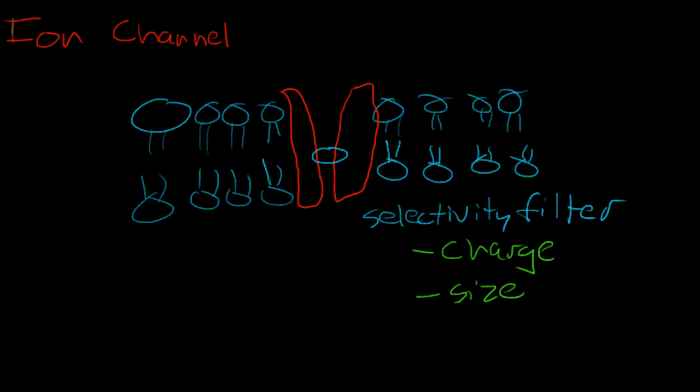For instance, there is an ion channel that is specific for potassium, and it allows potassium to slowly leak out of the cell from the intracellular space to the extracellular space. But it doesn't let any other ions pass through. So this is an ion channel that is specific for potassium. By the nature of the selectivity filter, by size and charge and other factors, it only lets potassium leak through.